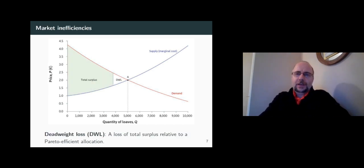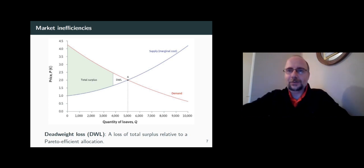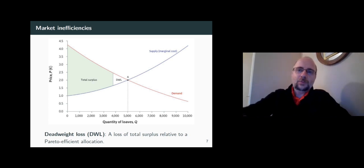If for any reason, and there are plenty of reasons by the way, the market ends up producing less than the equilibrium quantity, or for any reason the market ends up asking more than the equilibrium price, the market will be experiencing a loss of total surplus, a loss of welfare. We call this loss a deadweight loss.